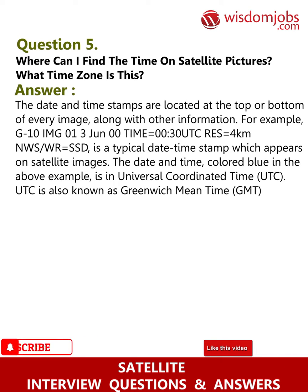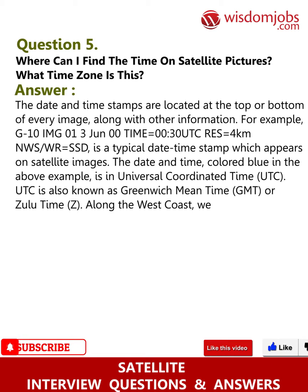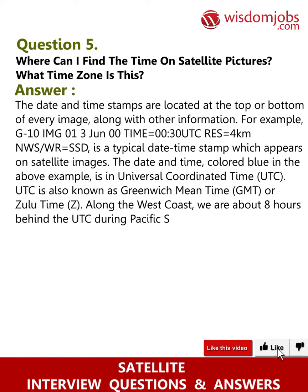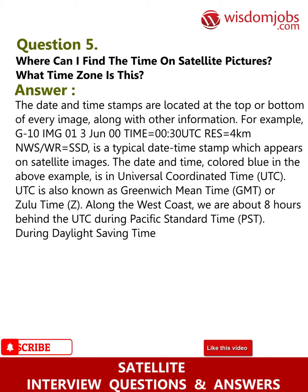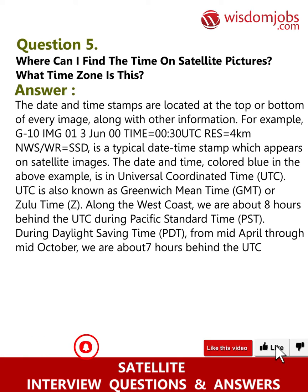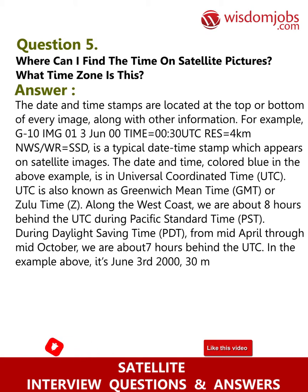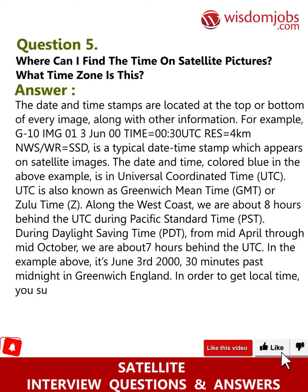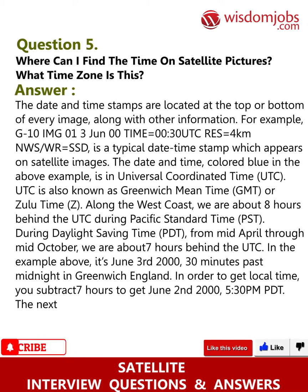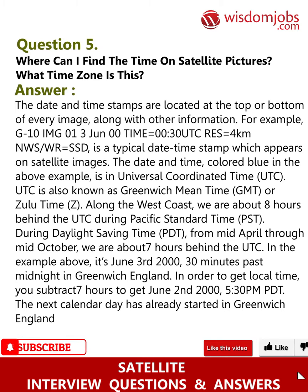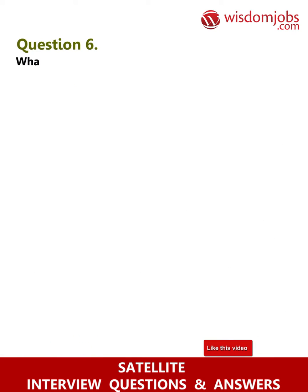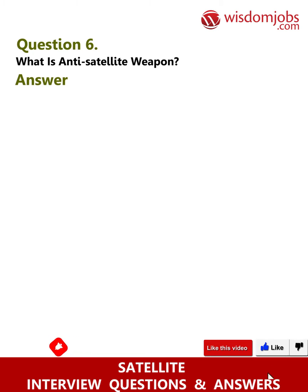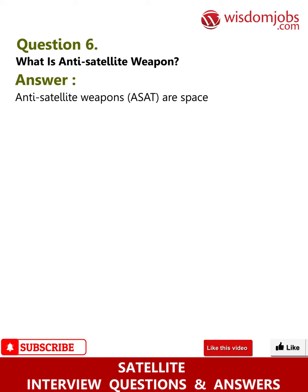The date and time shown in blue is Universal Coordinated Time (UTC), also known as Greenwich Mean Time (GMT) or Zulu time. Along the west coast, we are about eight hours behind UTC during Pacific Standard Time (PST). During Daylight Saving Time (PDT), from mid-April through mid-October, we are about seven hours behind UTC. In the example, it is June 3rd 2000, 00:30 UTC; subtracting 7 hours gives June 2nd, 5:30 PM PDT.